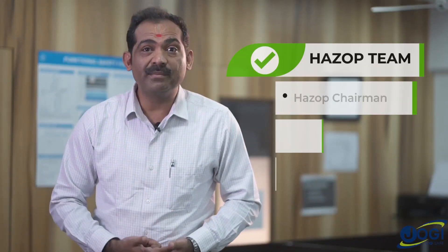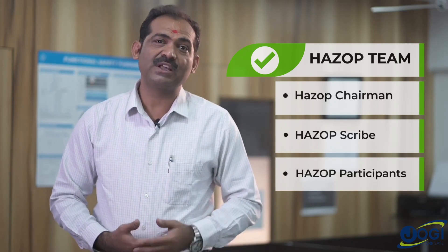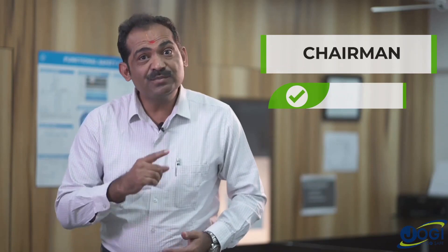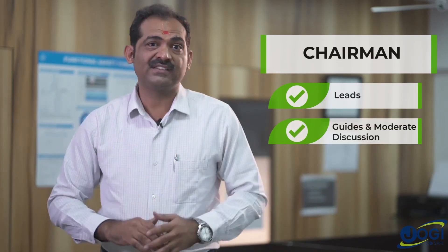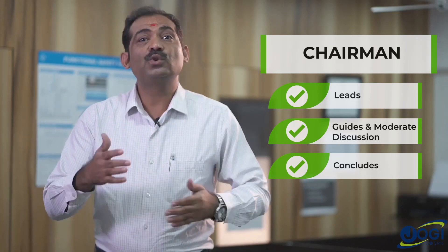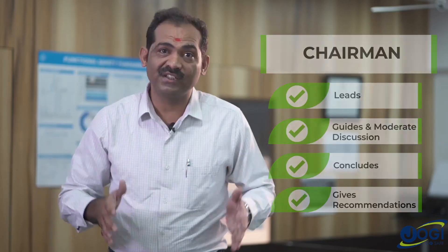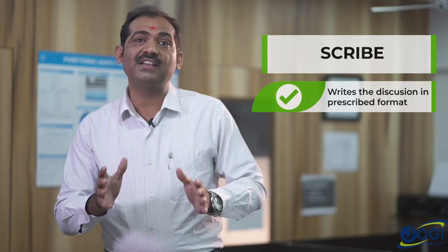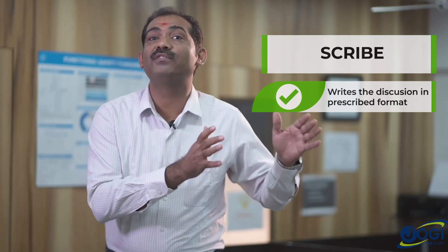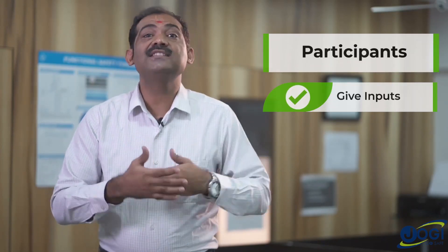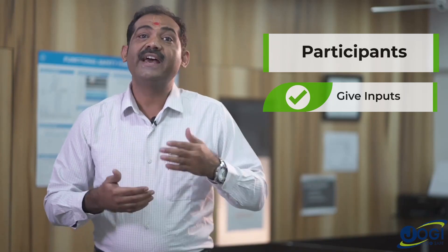The team of a HAZOP study consists of a HAZOP chairman, a HAZOP scribe, and participants. The chairman moderates the discussion, guides people, and concludes when the discussion is over — he is the overall in-charge. The scribe writes the discussion in tabulated form in the prescribed worksheet format. The participants provide inputs about the process as asked by the chairman during the different stages of the study.